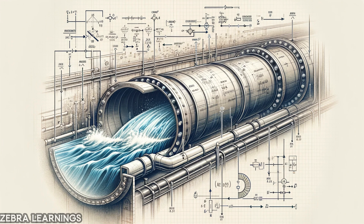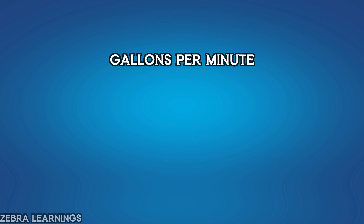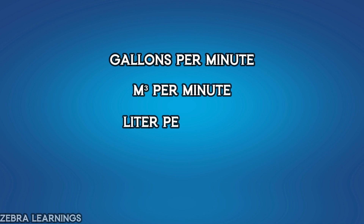The flow rate is specified in 3 units: gallons per minute, cubic meters per minute, and liters per minute. Let us learn clearly about these 3 units.